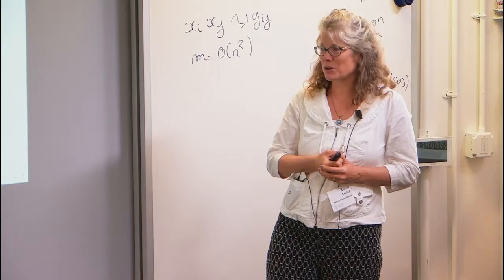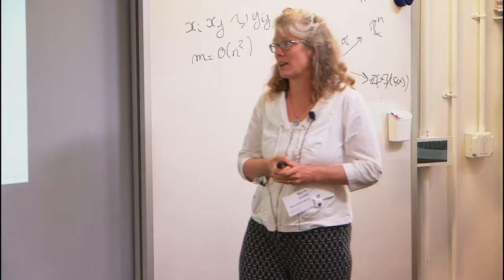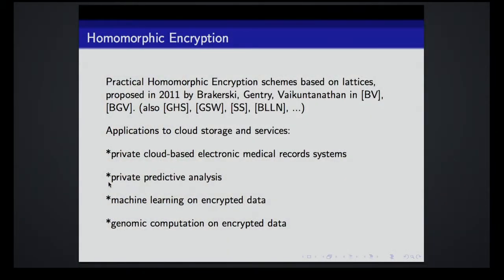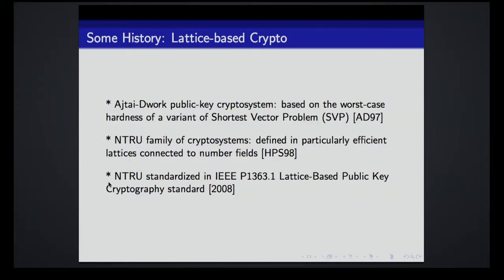We're diving into this line of research in order to better understand whether there are additional attacks that could threaten it. Practical homomorphic encryption schemes, based on work proposed by Gentry and then Brakerski, Vaikuntanathan, Brakerski, Gentry, Vaikuntanathan, et cetera, are in use today for all kinds of applications: cloud storage and services, privacy for electronic medical records, private predictive analysis, machine learning on encrypted data, and genomic computation on encrypted data — there was a very high-profile contest this spring for this.